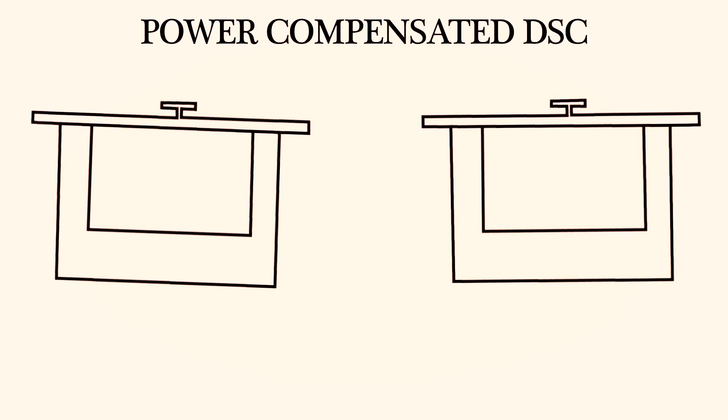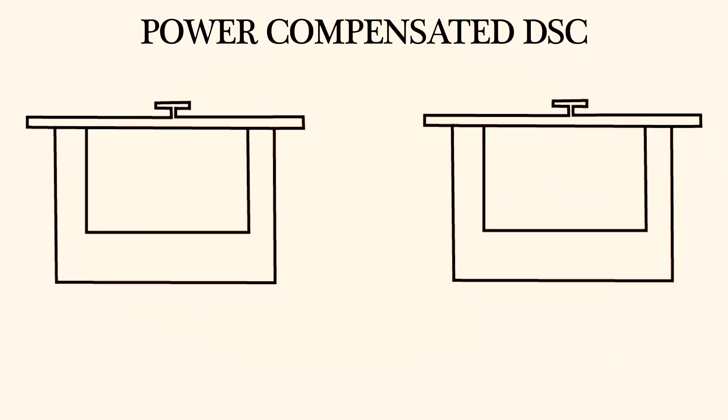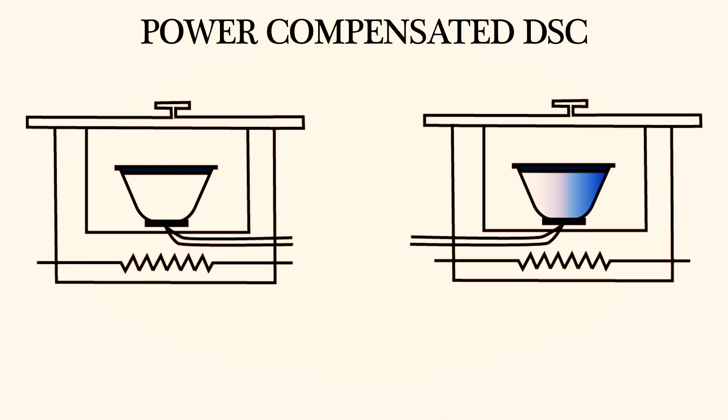Unlike the heat flux DSC, the power compensated DSC consists of two holders, one for the reference as well as the sample, each having its own sensors and heater. These two calorimeters are placed in a common block having a certain temperature. Platinum resistance thermometers measure the temperature. Next to the thermometers, two individual heaters are also built right below it to control the temperature.